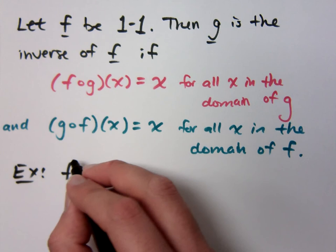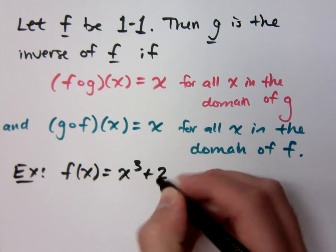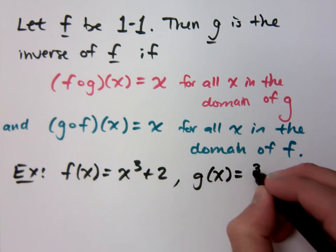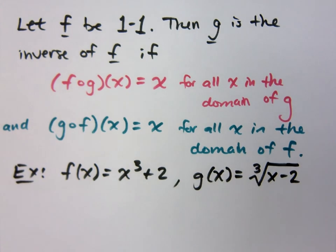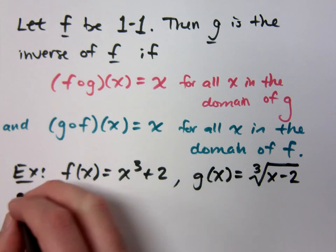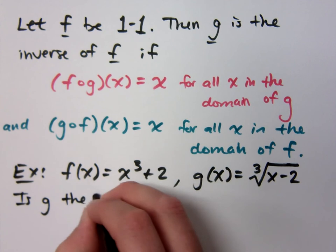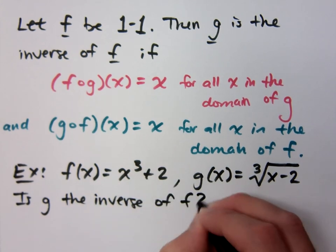So what if I say this? f of x equals x to the third plus 2, and g of x equals the cube root of x minus 2. So I'm going to give you these two functions. And I'm going to ask you this question: Is g the inverse of f?